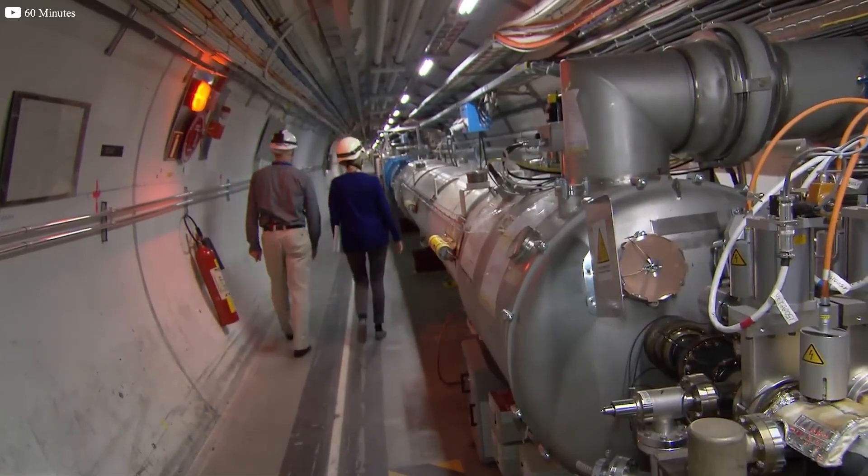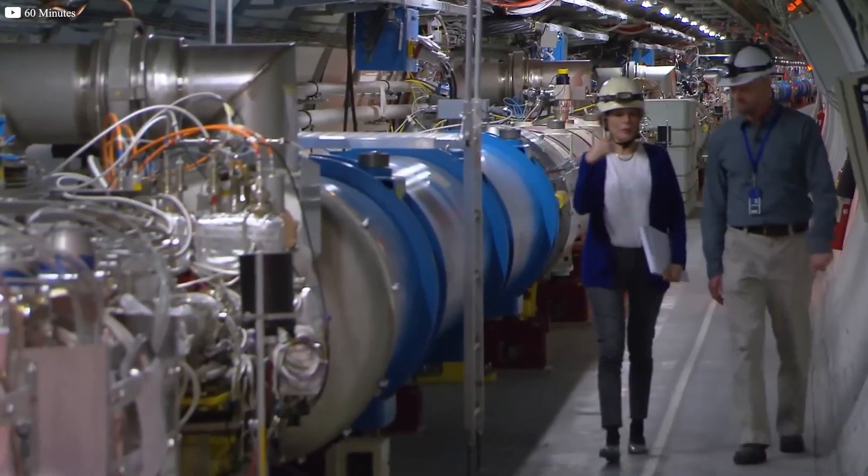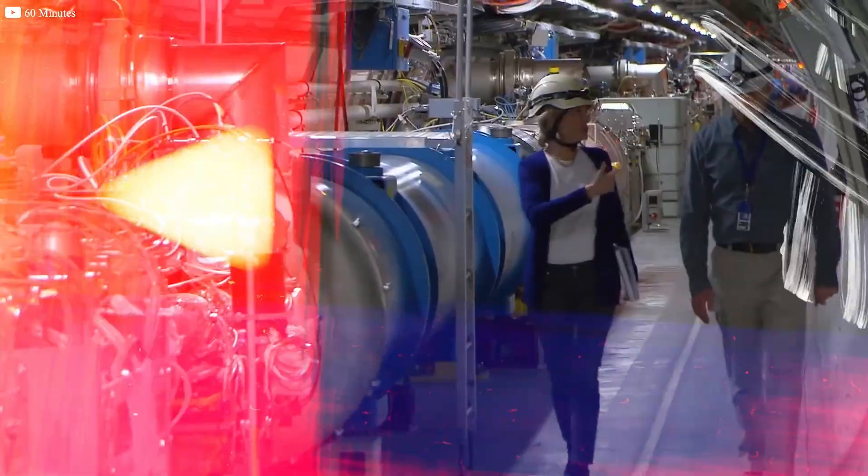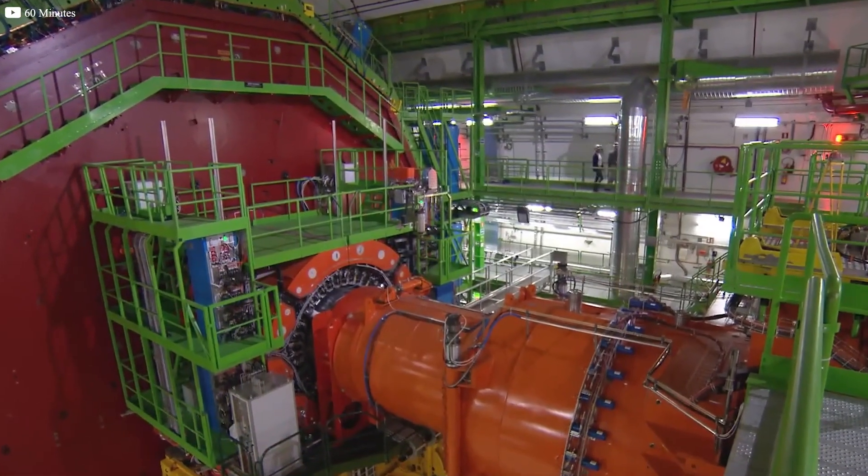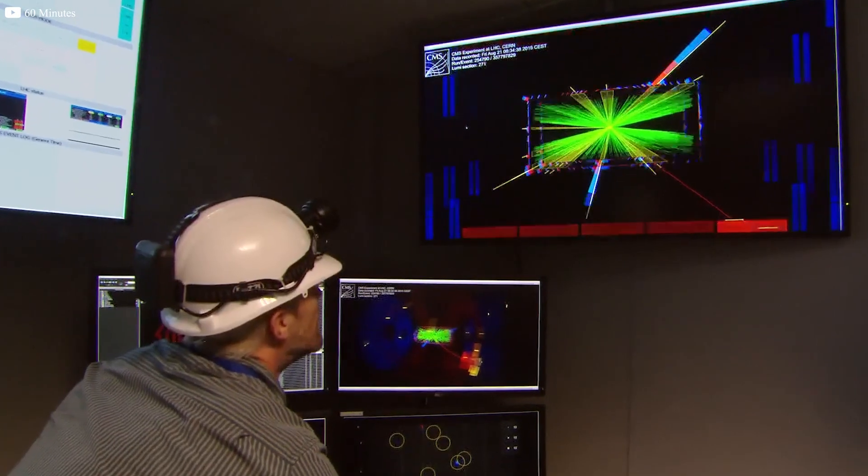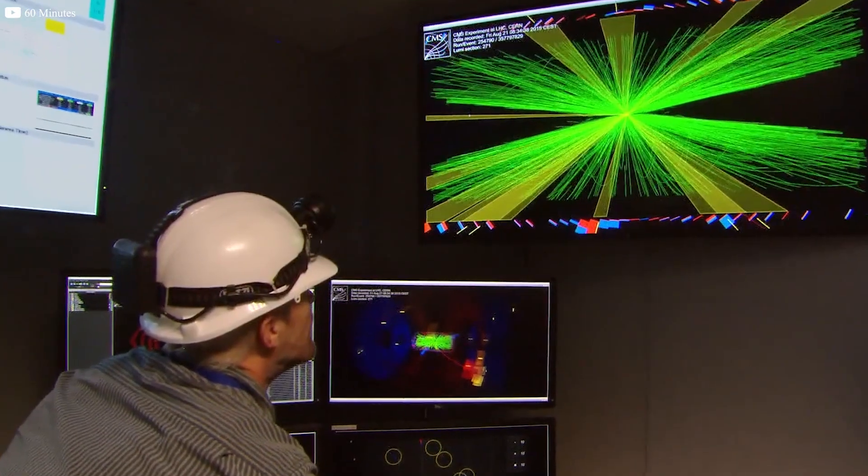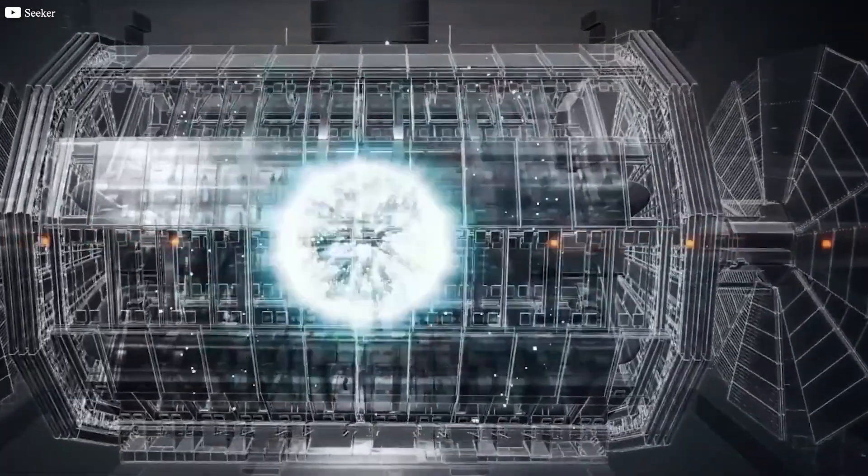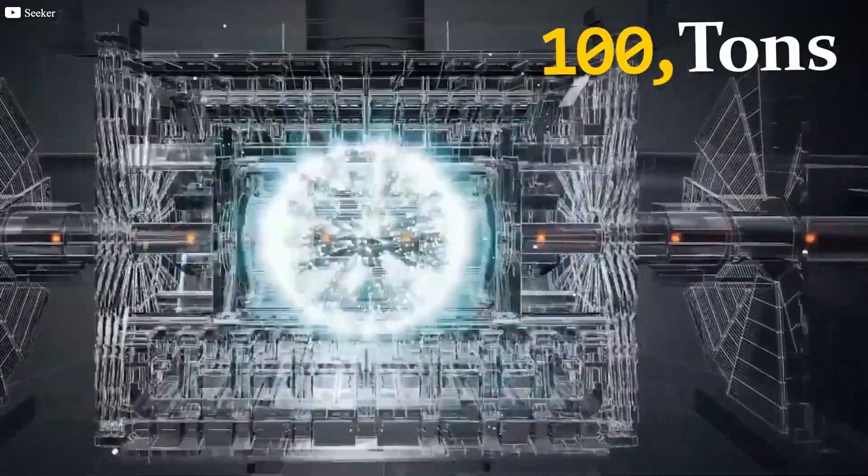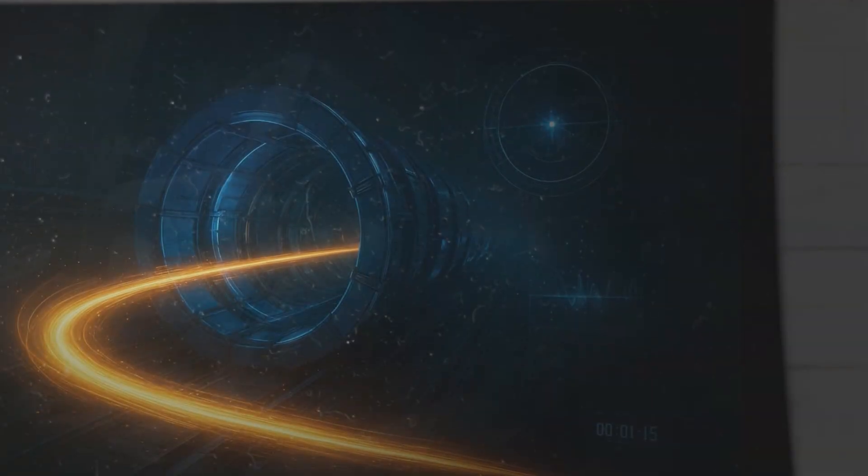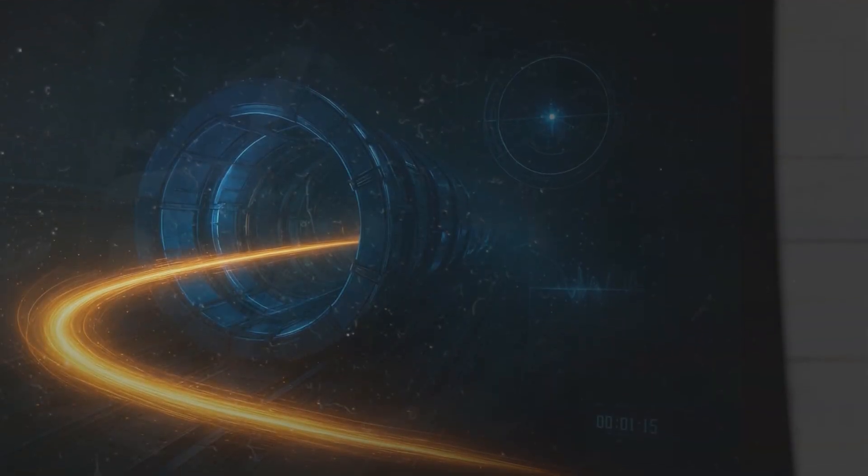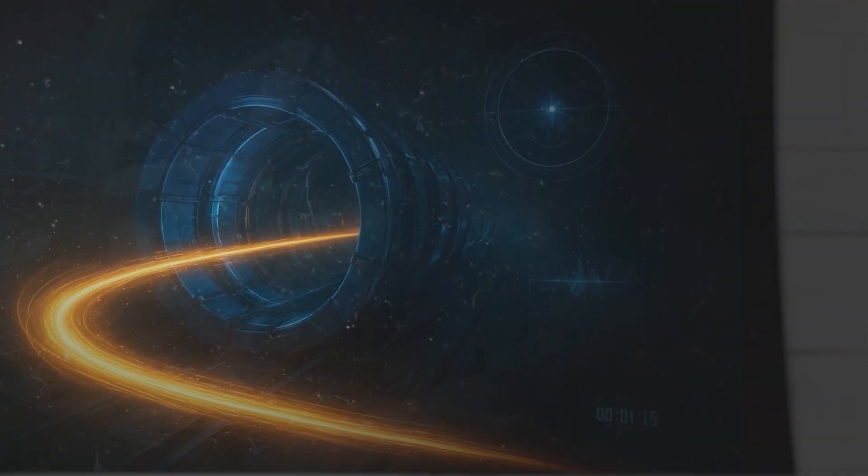Inside this underground ring sit nearly 10,000 superconducting magnets. To work, they must be kept colder than outer space, only a couple of degrees above absolute zero. For that, the collider consumes almost 100 tons of liquid helium. When switched on, the magnets steer beams of protons around the ring at almost the speed of light.